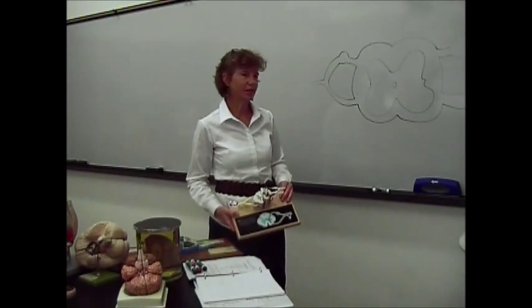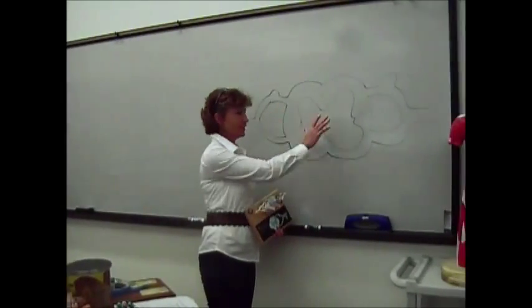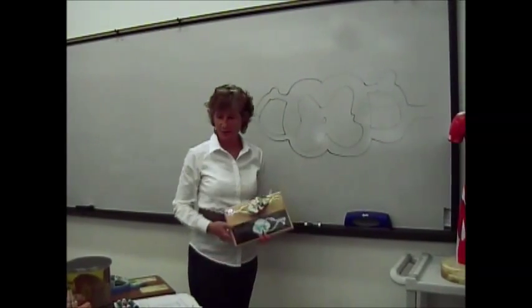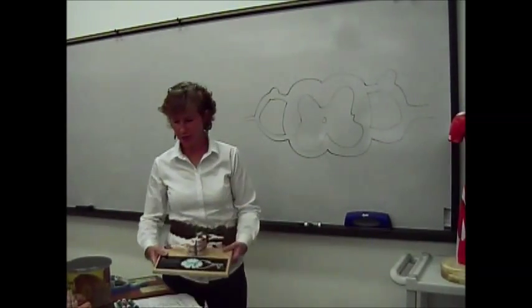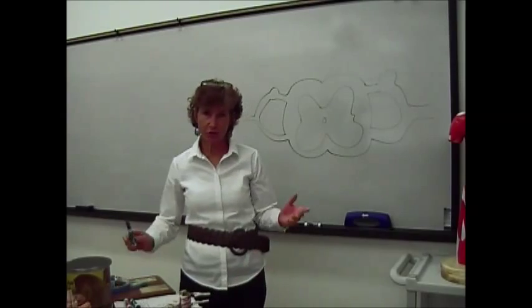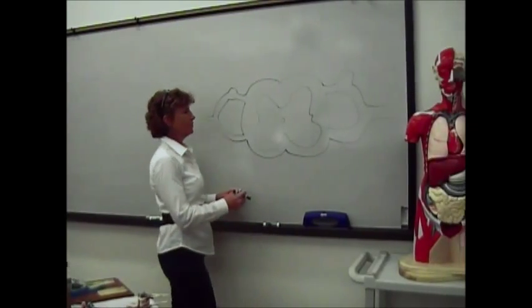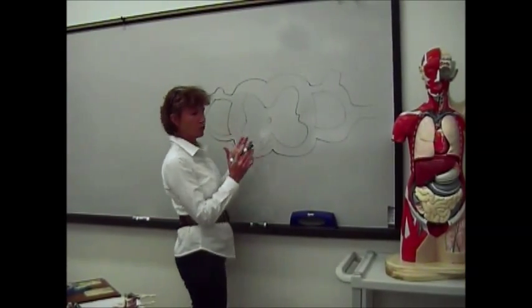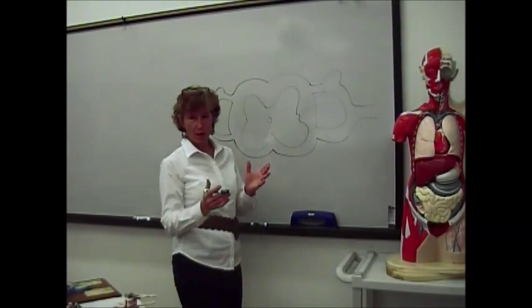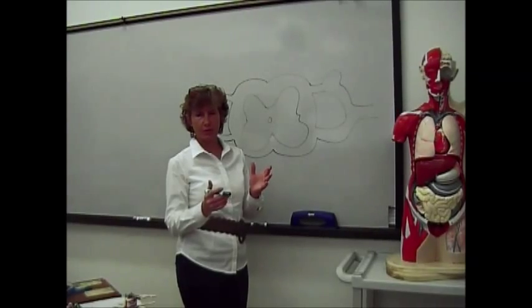Now we want to talk about the spinal cord. I've drawn a really bad drawing up here of the spinal cord just to give you an idea of what we're looking at, and then I'll show it to you on the models. Remember, you've got gray matter and white matter in the central nervous system.